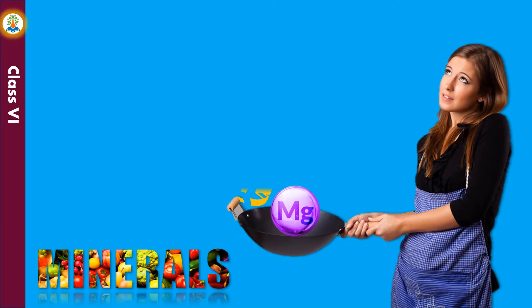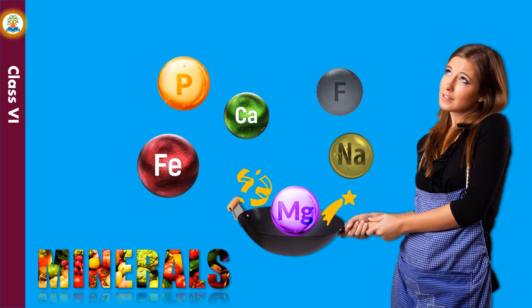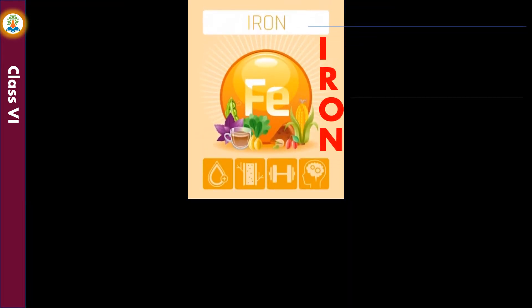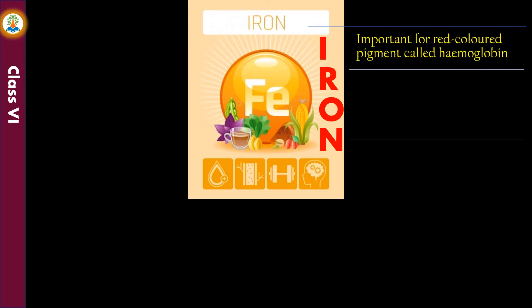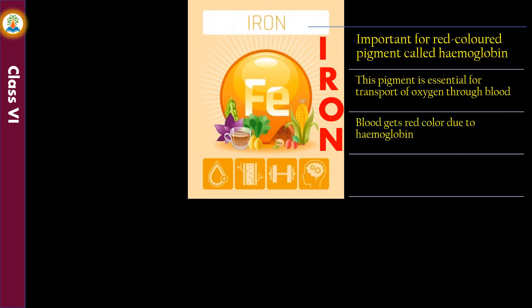Minerals are also important elements required for maintaining good health and overall well-being; they are required in small quantities and make up about 4% of a person's mass. Iron is important for the red-colored pigment called hemoglobin, which is essential for the transport of oxygen through blood. Iron is present in green leafy vegetables, apple, jaggery, tamarind, figs, and guava.